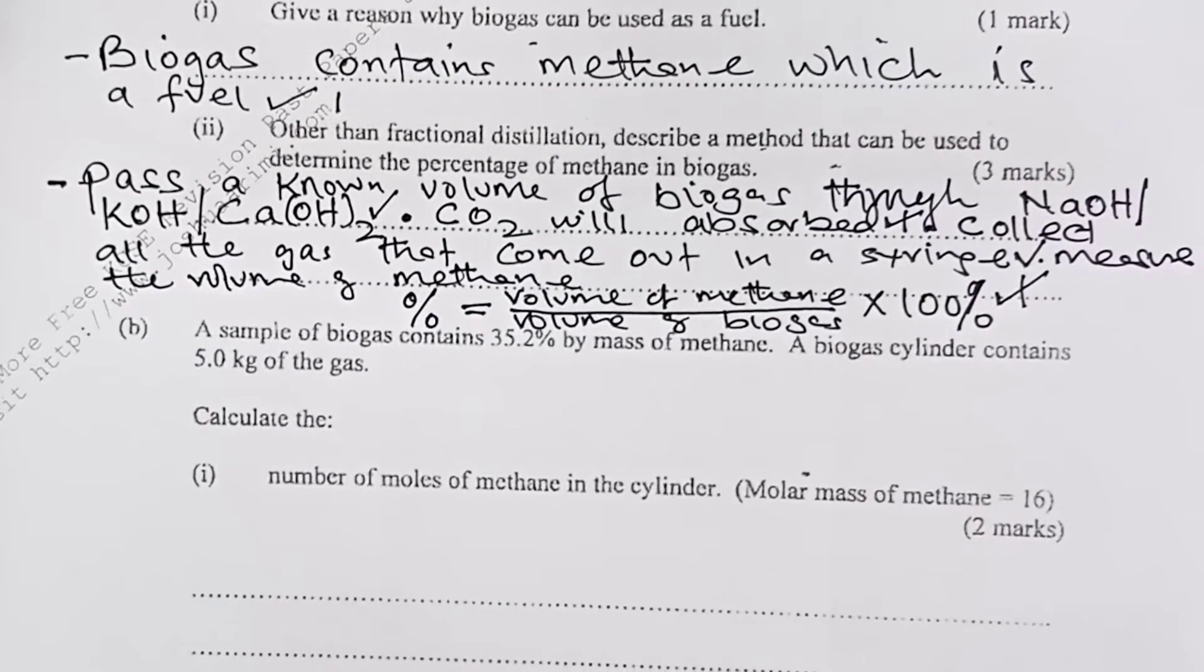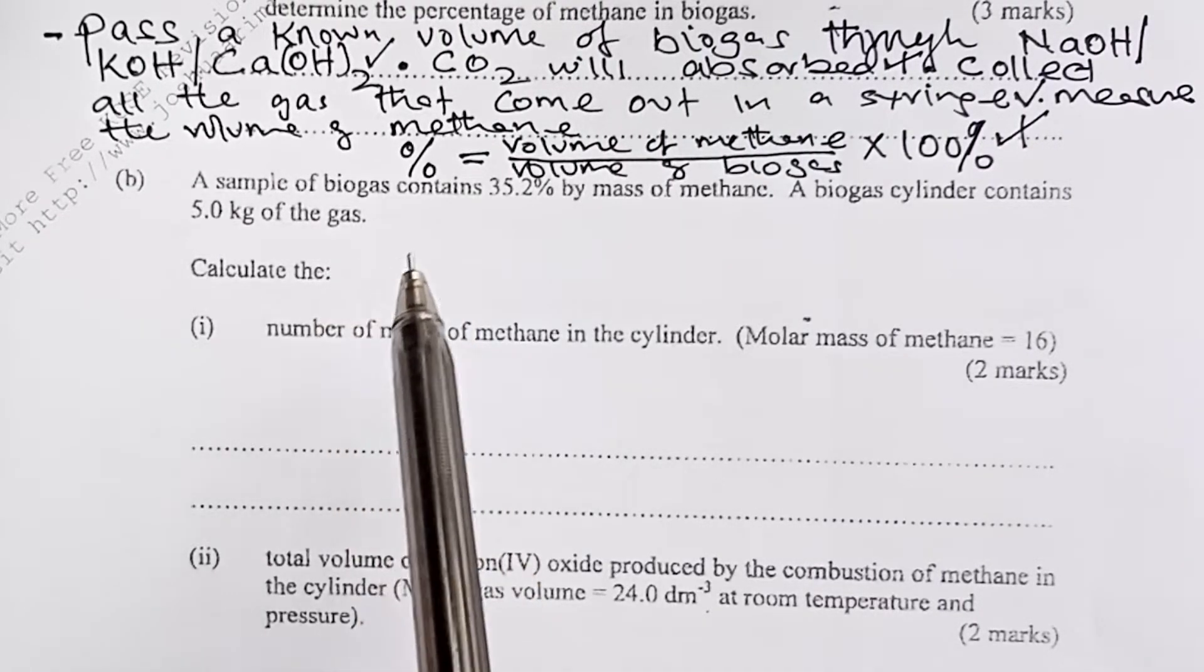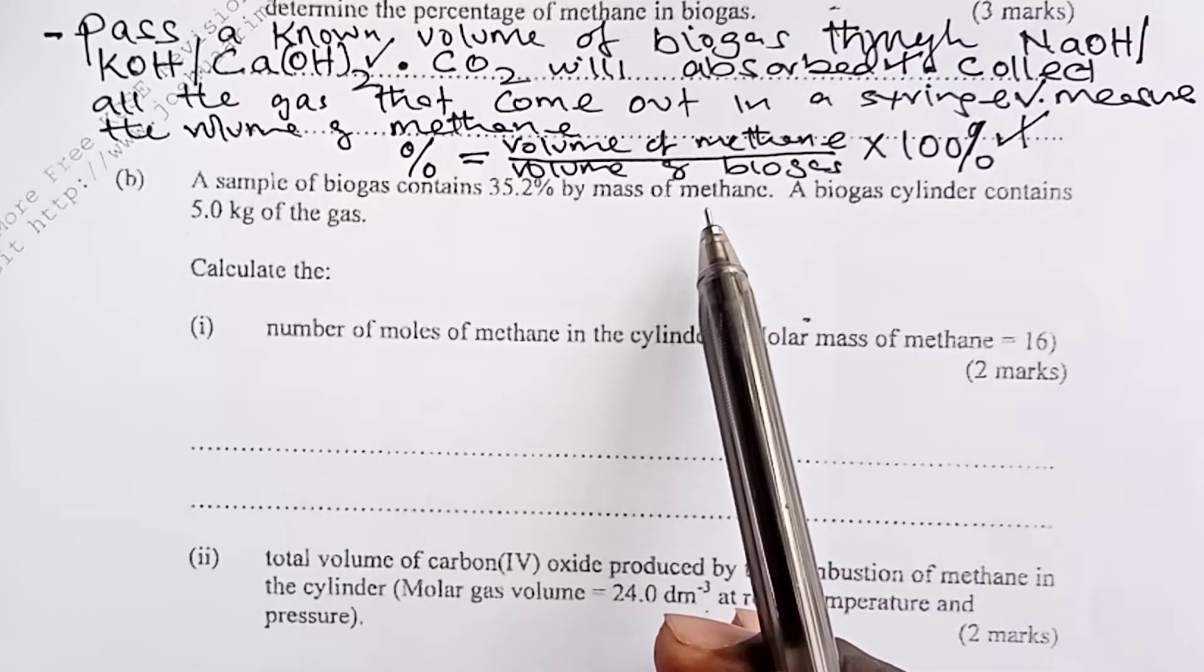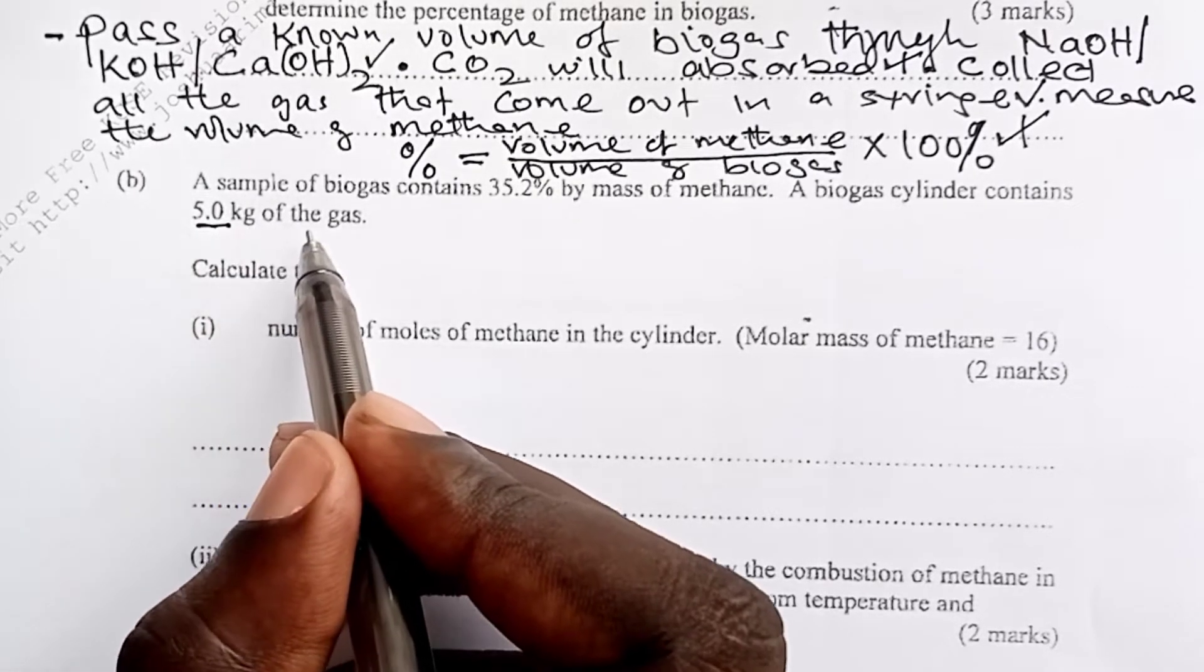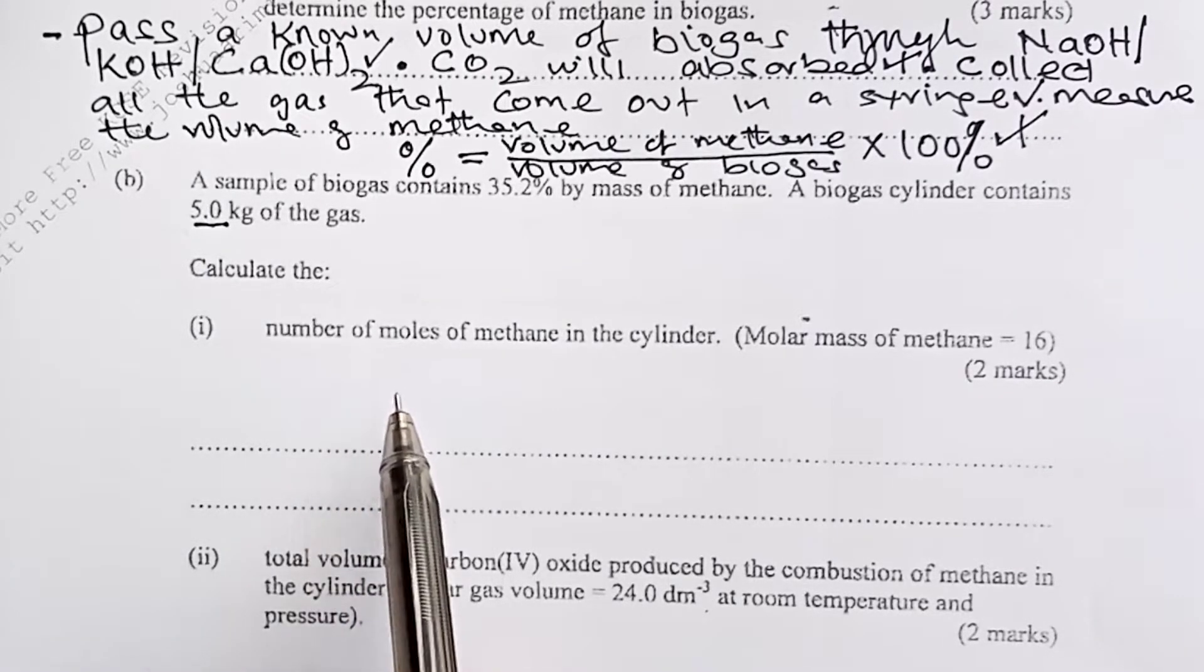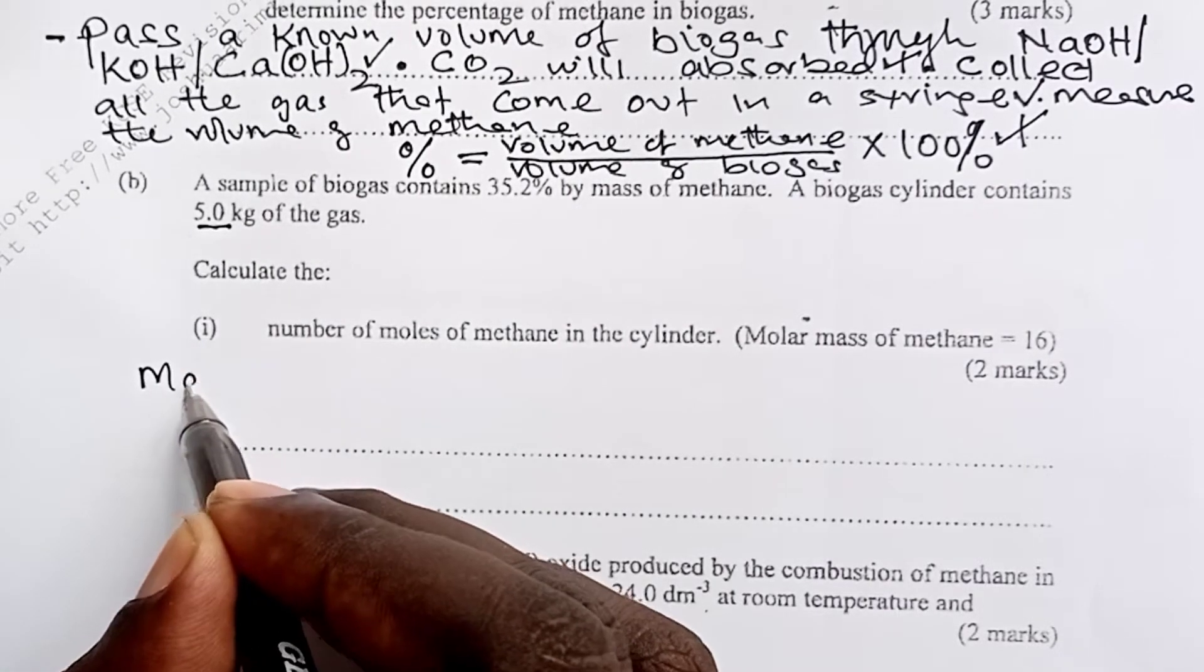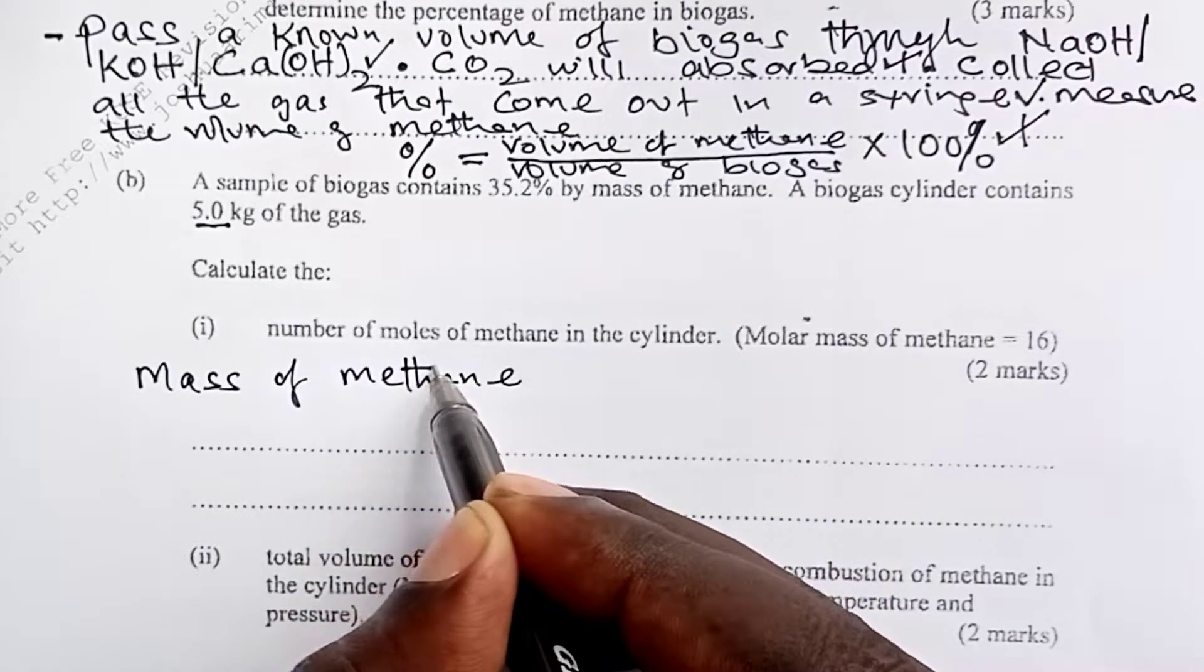To part B of number 1, a sample of biogas contains 35.2% by mass of methane. Then, a cylinder containing biogas had 5 kilograms of the gas. We are being told to calculate number of moles of methane in the cylinder. So the first thing we shall do is to get the mass of methane out of the 5 kilograms, what was the mass of methane.